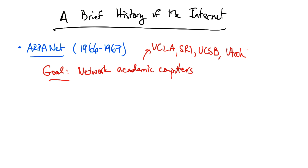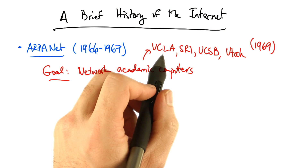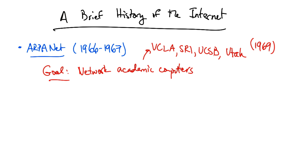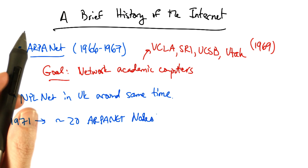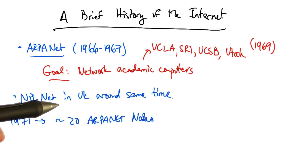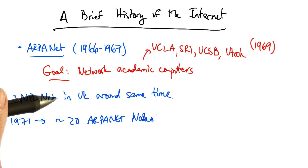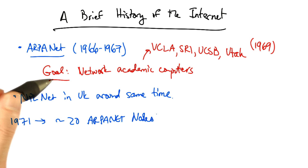The first operational ARPANET nodes came online in 1969 at UCLA, SRI, UCSB, and Utah. Around the same time, the National Physical Laboratory in the UK also came online. By 1971, there were about 20 ARPANET nodes and the first host-to-host protocol.